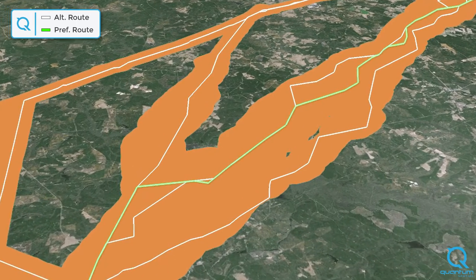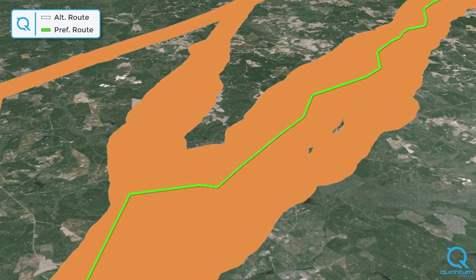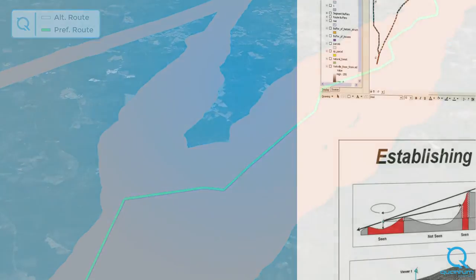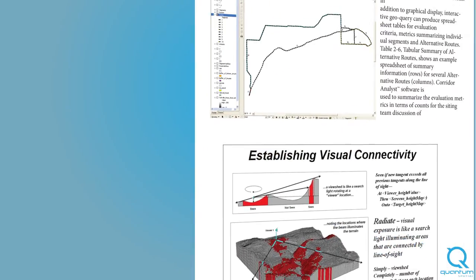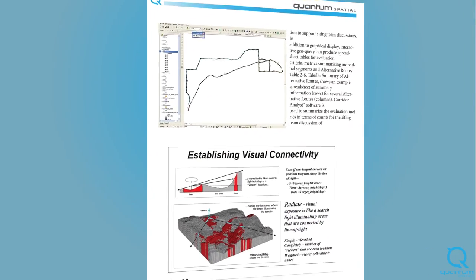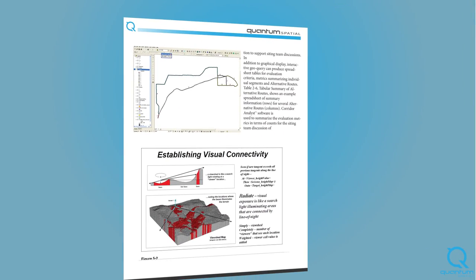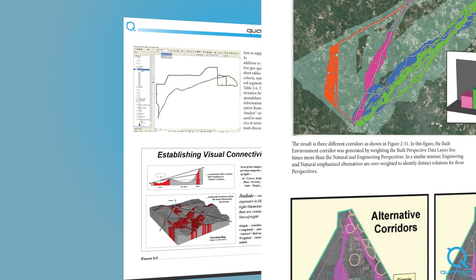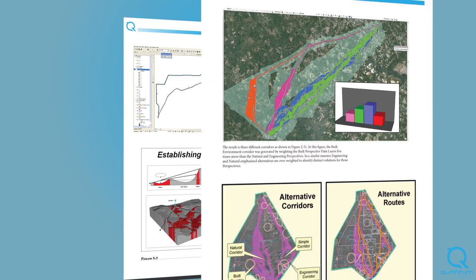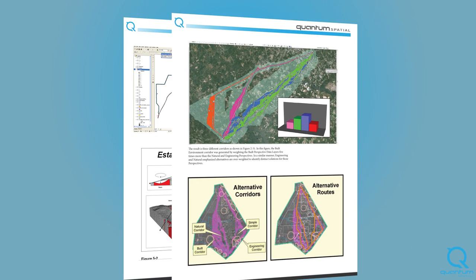With the assistance of tools such as Corridor Analyst, expert judgment, and stakeholder input, Quantum Spatial provides the project team with comprehensive documentation of the preferred route and siting process, including narrative maps and statistics.